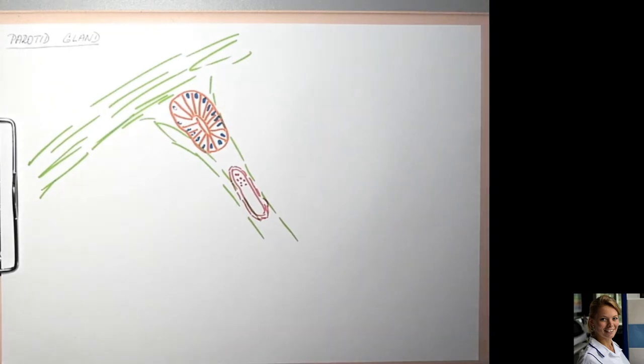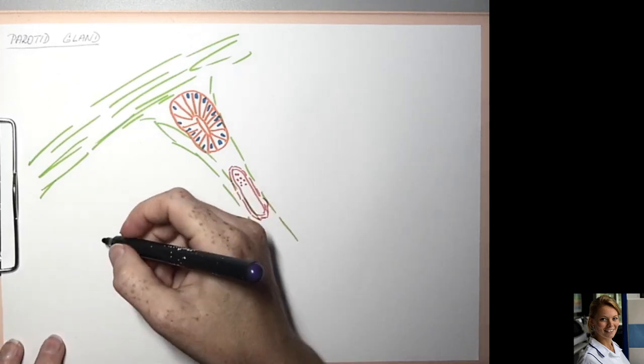In the lobules, in the parenchyma, there are secretory units called acini which are composed of serous cells. Serous cells have a pyramidal shape.